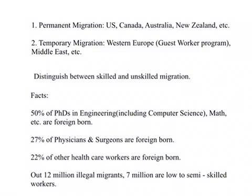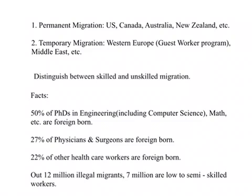There is legal migration as well as illegal migration. In the US, about 12 million migrants were illegal, and out of these 12 million illegal immigrants, 7 million had low to semi-skilled occupations. We should keep this in the background as we analyze the causes as well as the consequences of international labor migration.